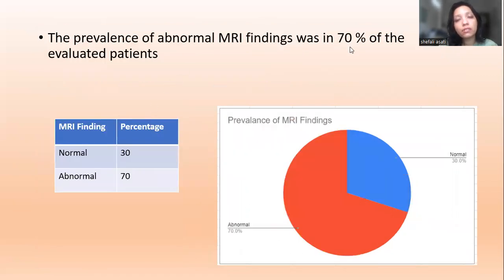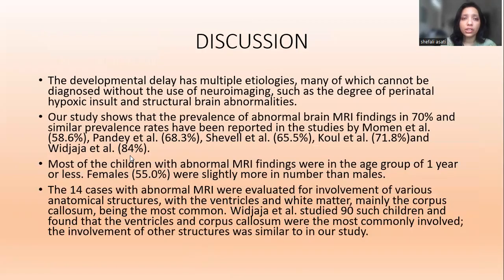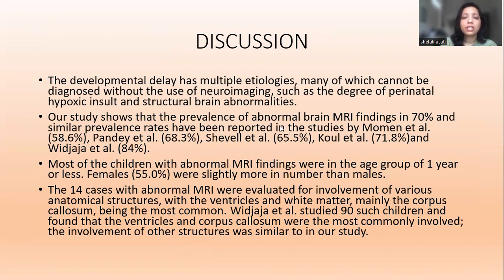The prevalence of abnormal MRI findings was 70% among evaluated patients; 30% of the 20 patients were normal. Developmental delay has multiple etiologies, many of which cannot be diagnosed without neuroimaging, such as the degree of perinatal hypoxic insult and structural brain abnormalities. Similar prevalence rates have been reported in the literature. Most children with abnormal MRI findings were in the age group of 1 year or less, and females were slightly more in number than males. In 14 cases, abnormal MRI findings were identified and anatomical structures evaluated.